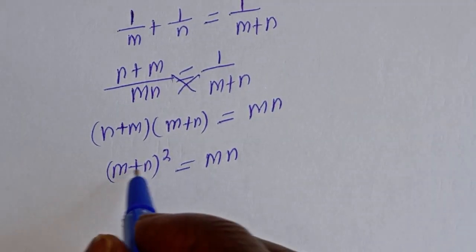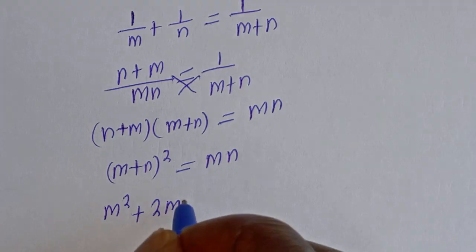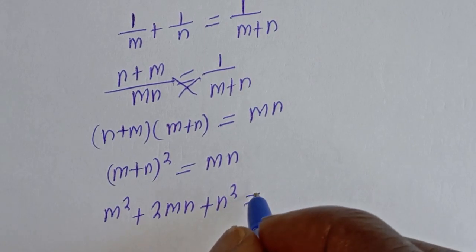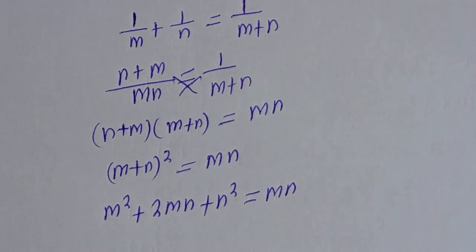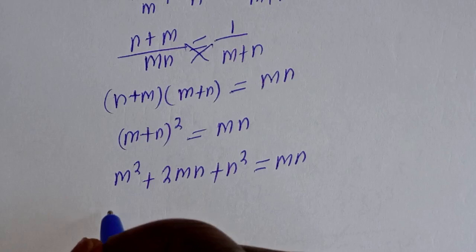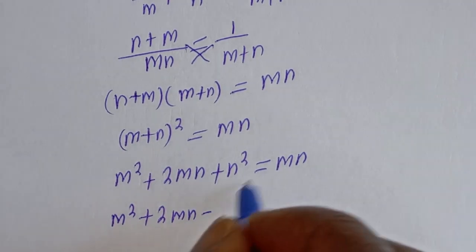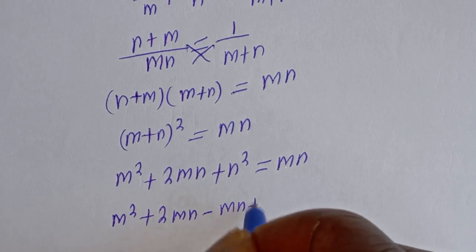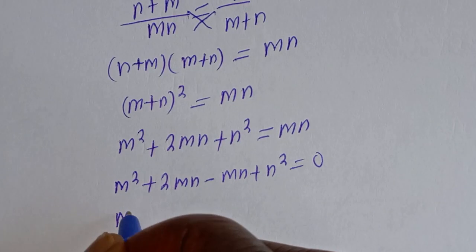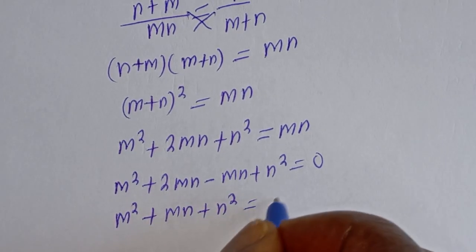And this m plus n square can be written as m square plus 2mn plus n square is equal to mn. And this is m square plus 2mn minus mn plus n square is equal to 0. So this is m square plus mn plus n square is equal to 0.